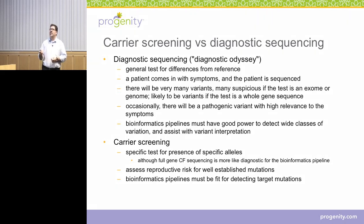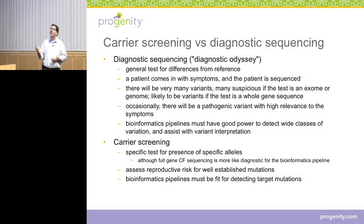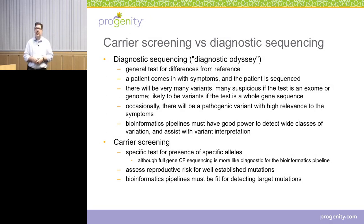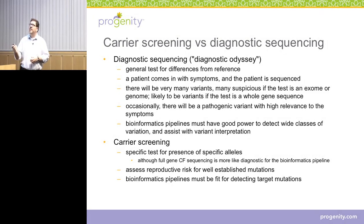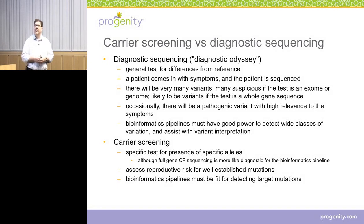Most of the variants you'll have no idea whether or not they're related to the disease state, but occasionally — about 25% of the time, especially if you can do a trio of the patient and the parents — you'll find a variant that's likely to be pathogenic. Maybe there's some support in the literature and it has high relevance to the symptoms, and that would be a success in this context. For this kind of application, your bioinformatics pipelines have to have very good power to detect wide classes of variation: not only SNPs, but indels, structural variants, and all those sorts of things. The pipelines also have to assist with variant interpretation, since most variants you don't know what they do, so you have to look in databases and literature.